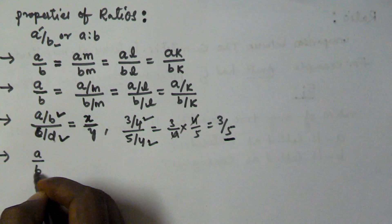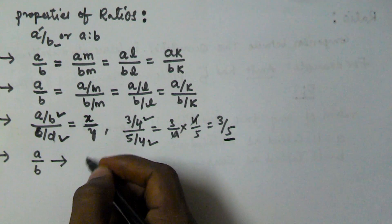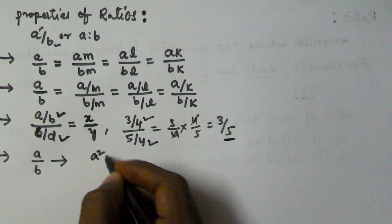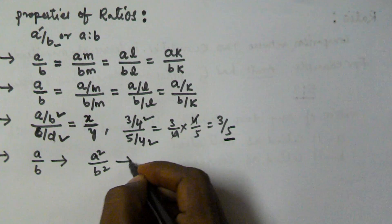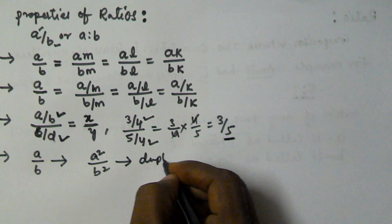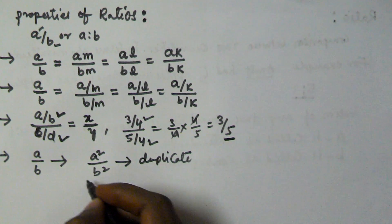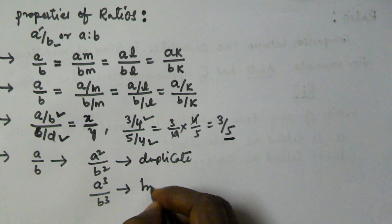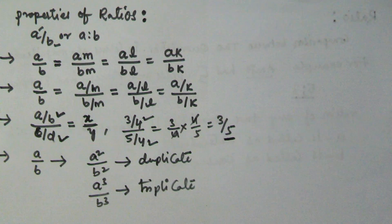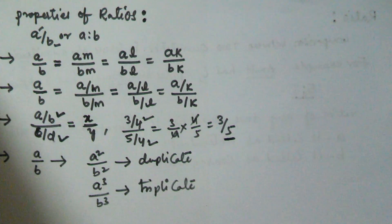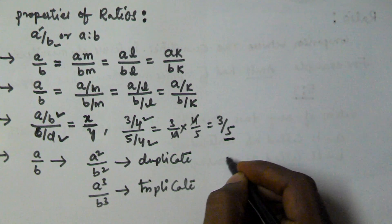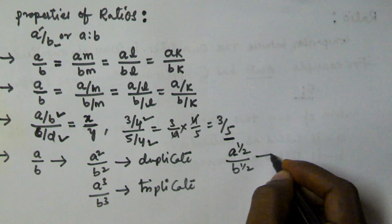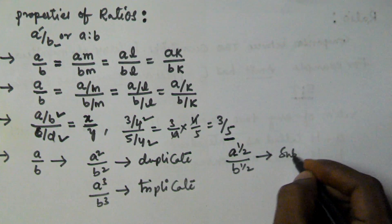Next, if A by B is the ratio, then A squared by B squared is called the duplicate ratio. A cubed by B cubed is called the triplicate ratio. And A to the power of 1 by 2 over B to the power of 1 by 2 is called the subduplicate ratio.